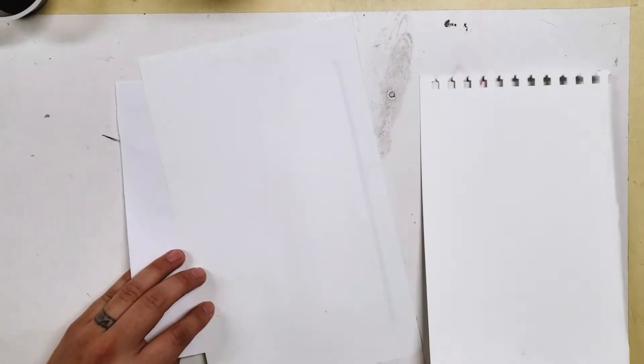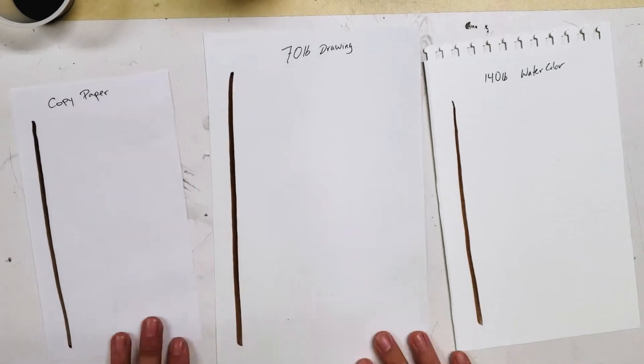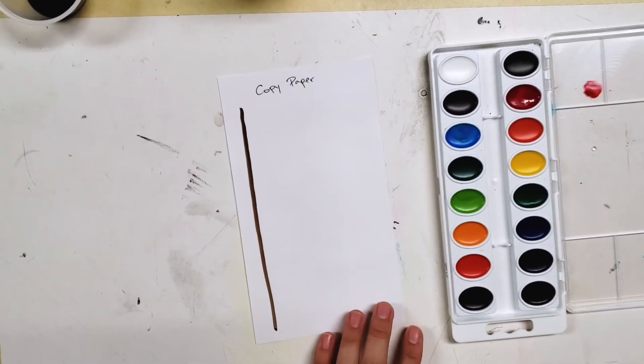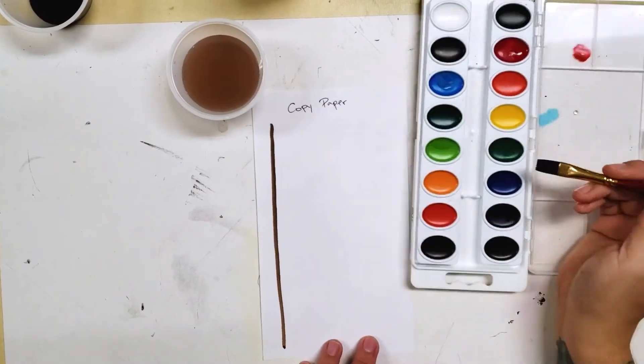You can see that on the watercolor paper we can see through it, but on both the copy paper and drawing paper, the India ink was visible from the back side.